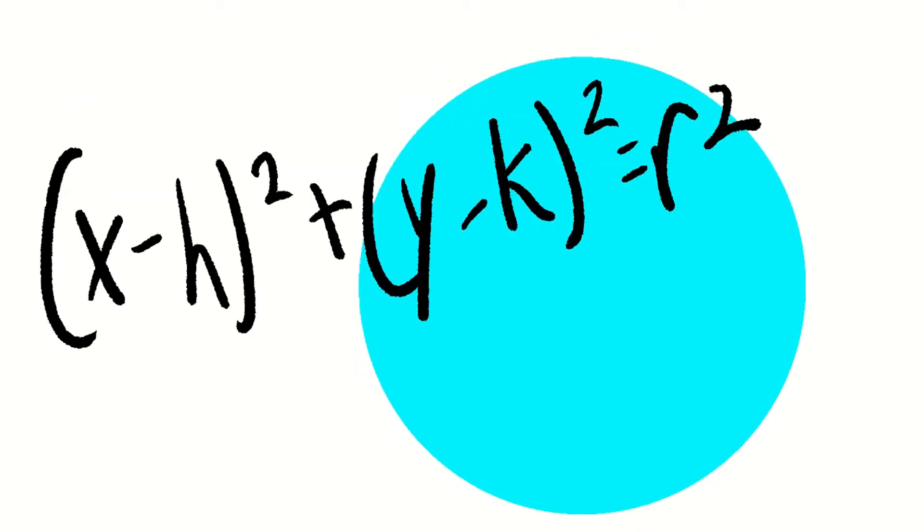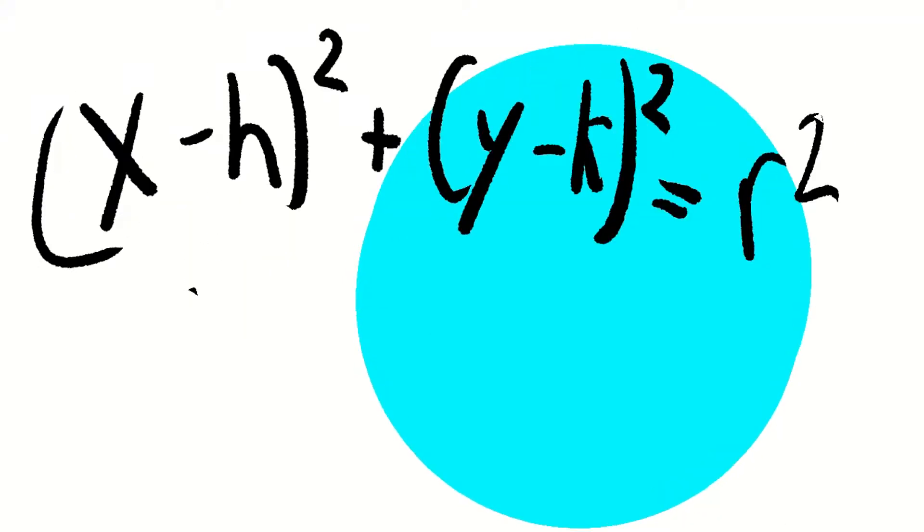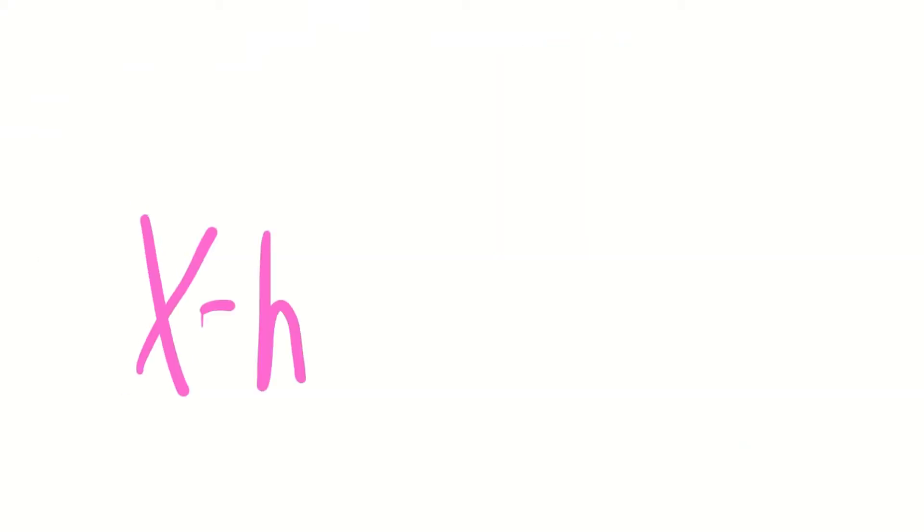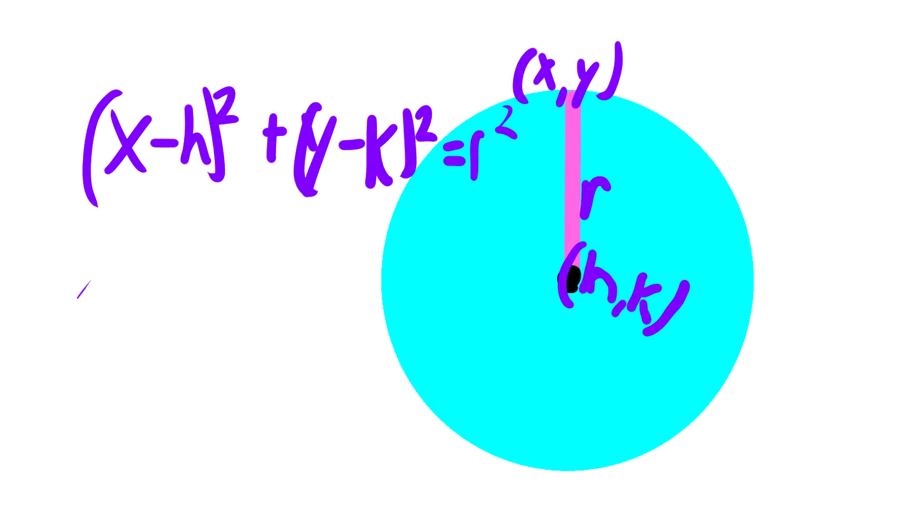For example, the radius of a circle can be related to the center of the circle along with any point on that circle. The equation can be written as x minus h squared plus y minus k squared equals r squared, in which x and y represent a point on the circle, h and k represent the center of the circle, and r represents the radius.